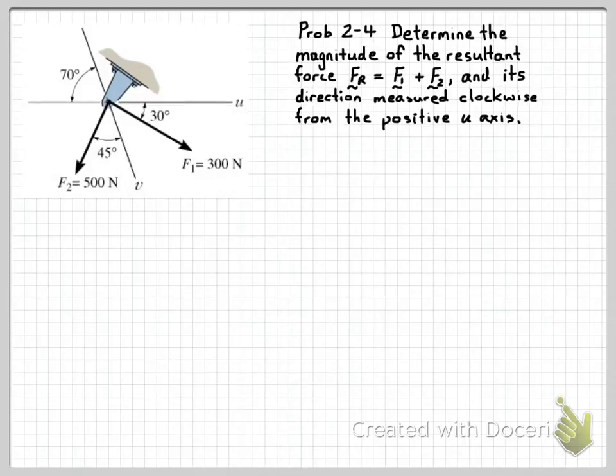So before we start, let's consider what we have. We have our force F1 of 300 newtons acting 30 degrees clockwise from the u-axis. And we have force F2 equal to 500 newtons at 45 degrees to this v-axis, which is also at 70 degrees to the u-axis.